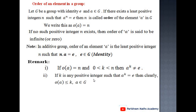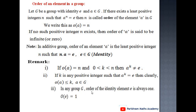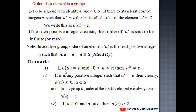Second remark: if k is any positive integer such that a raised to k equals e, then clearly order of a is less than or equal to k. Third remark: in any group G, the order of the identity element is always 1, i.e., order of e equals 1. If a belongs to G and a is not equal to e, then order of a is greater than or equal to 2. These are important conditions for the order of an element: if order of a equals n and k < n, then a raised to k is not equal to e.